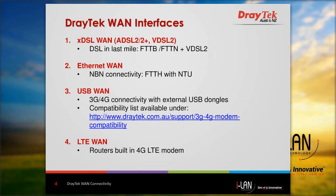The variety of DrayTek WAN options includes xDSL, Ethernet, USB, LTE, fiber, and wireless WAN. The xDSL WAN is suitable for premises with existing copper wires. The connection can be ADSL2+ or VDSL2. One example for deployment with DSL in the last mile is FTTB — fiber to the building — or FTTN, fiber to the node, utilizing copper wire DSL technology to end users.